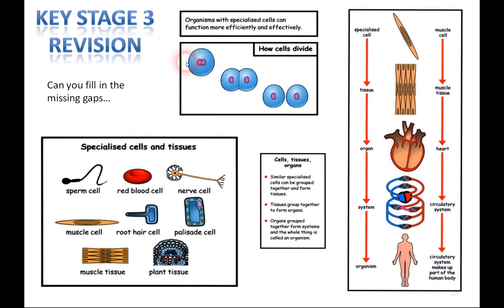We've got a muscle cell, muscle tissue, the heart, the circulatory system — and that makes up part of the human body. Specialised cells can function more efficiently and effectively. A cell with a nucleus starts to divide, splits, becomes smaller — we have two cells, a replica. The key point is: similar specialised cells can be grouped together to form tissues, tissues form organs, and organs form systems. The whole thing is called an organism, of which you are one.